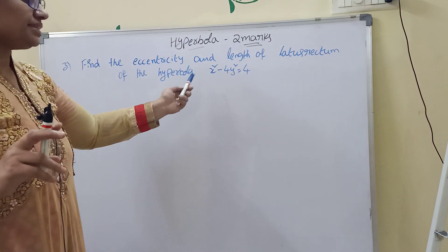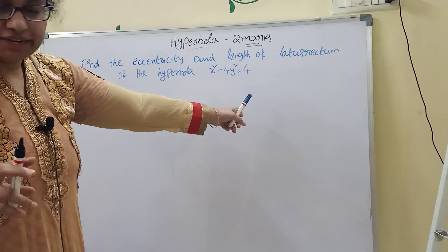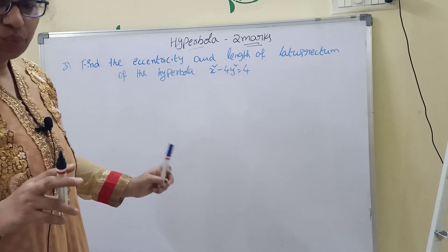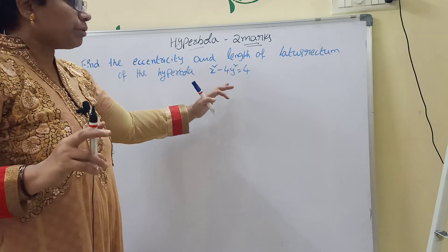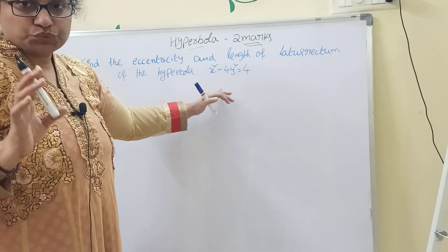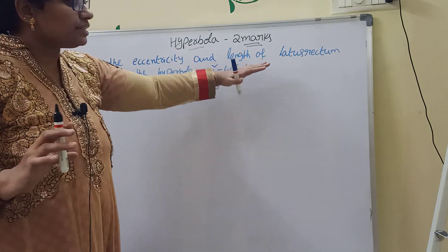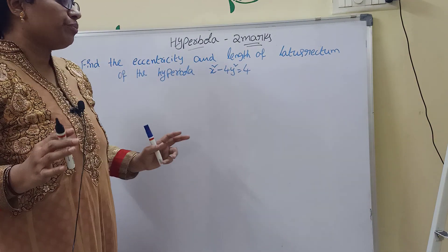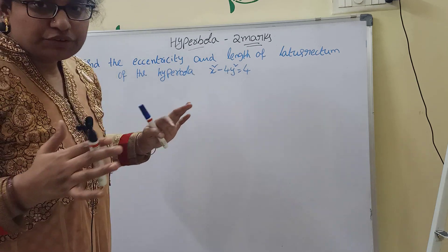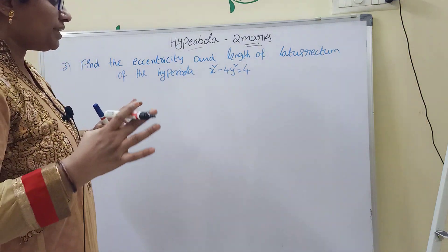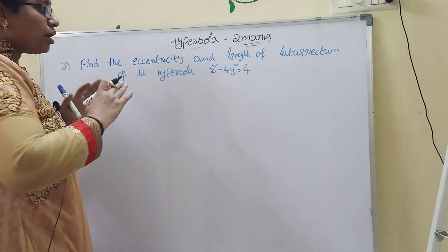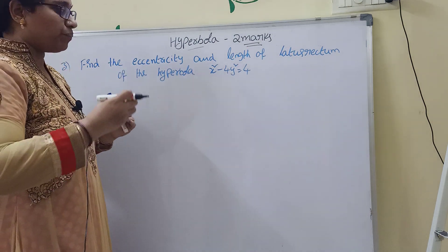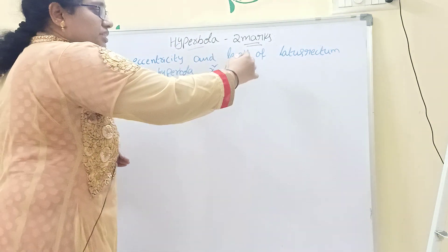Third question: find the eccentricity and the length of the latus rectum of the hyperbola x² − 4y² = 4. The given hyperbola must be converted to the general form x²/a² − y²/b² = 1. Since a constant is on the right, we divide both sides by that constant. Here we divide both sides by 4.